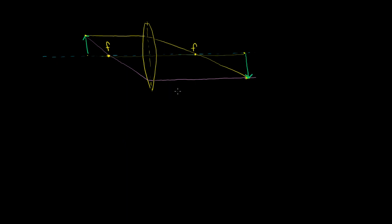In this example, we have an inverted real image. It's a real image because the light is actually converging at that point — you could put a screen there and project the image. In the next video, we're just going to practice drawing these rays to figure out what type of images we get depending on where the object is: at the focal point, beyond it, beyond two times the focal length, or within the focal point.